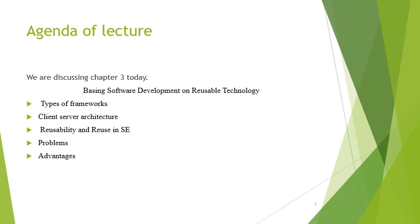Now I am discussing the agenda of our lecture today. We are discussing chapter 3: basic software development on reusable technology. The topics we will discuss are: types of frameworks — there are two types, horizontal and vertical — and a specific architecture, which is client-server architecture. We will also discuss reusability and reuse in software engineering, the role of reuse in software engineering, some problems behind this, advantages of it, and at the end we will conclude.